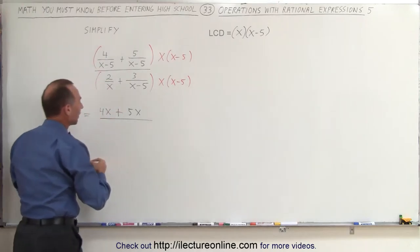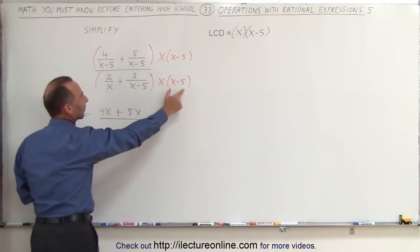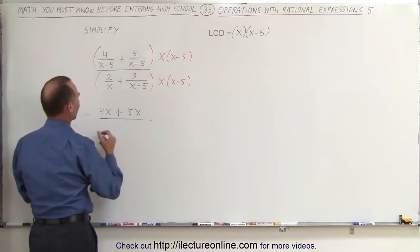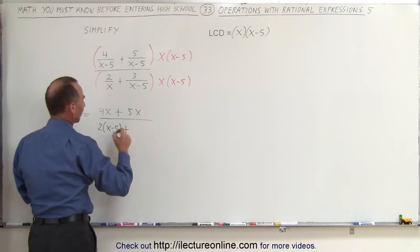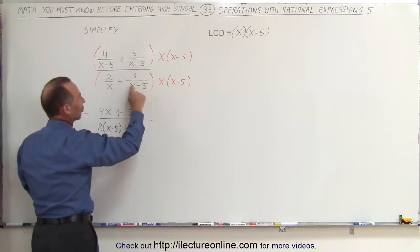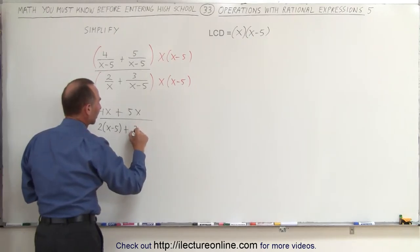Divided by, now here we multiply 2 over x times this, notice the x's cancel out, and the x minus 5 survives, so this becomes 2 times x minus 5 plus, and then again, in this fraction, notice the x minus 5's cancel out, and we get 3 plus x, or 3 times x.